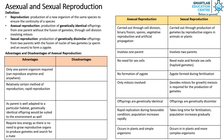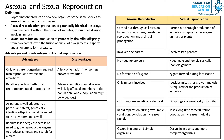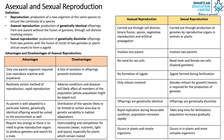The disadvantages of asexual reproduction are as follows. There is a lack of variation in offsprings which prevents evolution. Adverse conditions and diseases will likely affect all members of the population, resulting in the whole population being possibly wiped out. The distribution of the species is likely to be limited to certain areas due to limited genetic variability in habitat adaptations. Lastly, there might be overcrowding and competition for resources such as water, nutrients, light, and space, especially for plants which remain rooted.